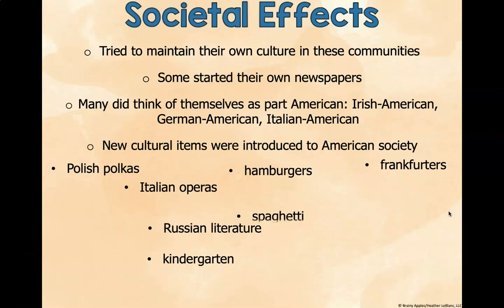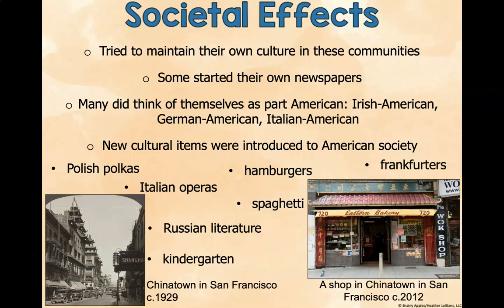Immigrants tried to maintain their own culture in these communities. Some started their own newspapers. They thought of themselves as Irish American, German American, or Italian American. New cultural items were introduced to American society — you can thank immigrants for Polish polkas, Italian operas, hamburgers, spaghetti, frankfurters, Russian literature, and kindergarten. These are pictures of Chinatown in San Francisco, and another picture of Chinatown in 2012.